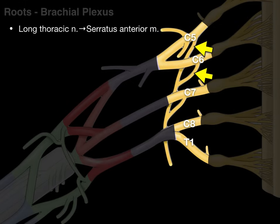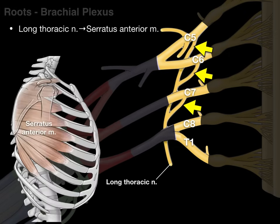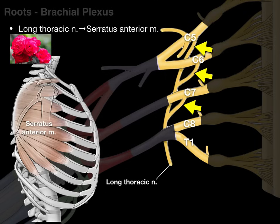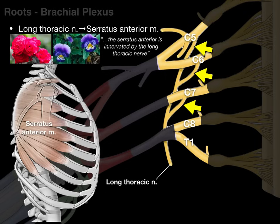Another branch is called the long thoracic nerve that innervates our serratus anterior. There are the C5, C6, and C7 contributions from C5, C6, and C7 roots that make our long thoracic nerve, which descends superficial to the serratus anterior and innervates it. A hand surgeon colleague told me this mnemonic: 'Roses are red, and violets are blue, and the serratus anterior is innervated by the long thoracic nerve.' Anatomy funny.